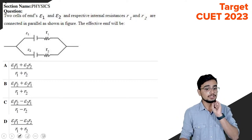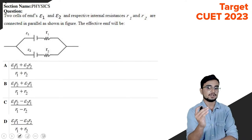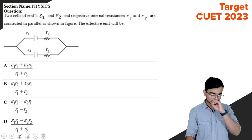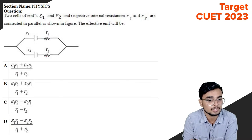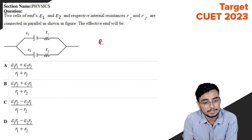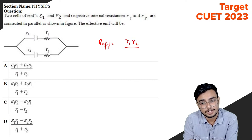The question is about two cells of EMF E1 and E2 connected in parallel. The effective EMF of the combination involves resistances r1 and r2. The effective resistance is r1 r2 divided by r1 plus r2.